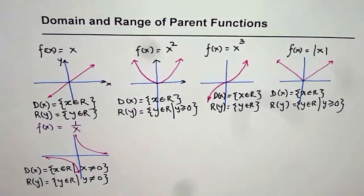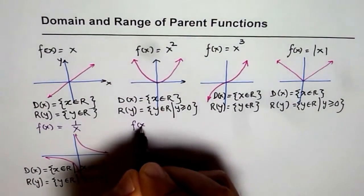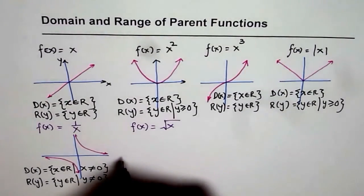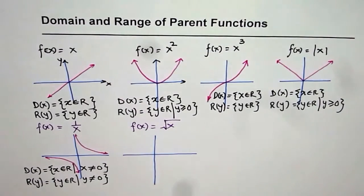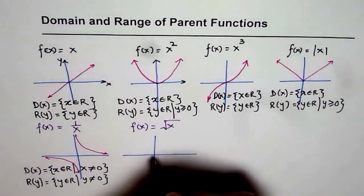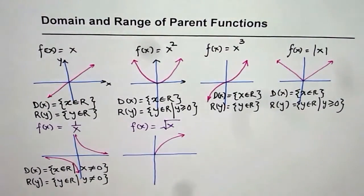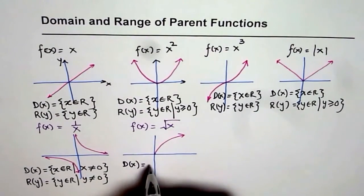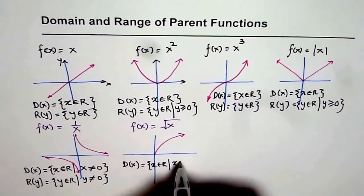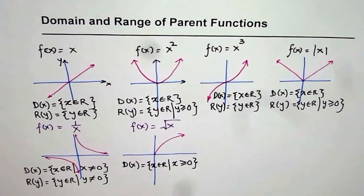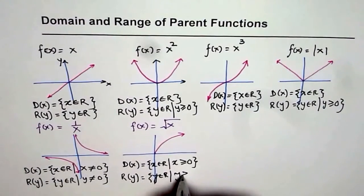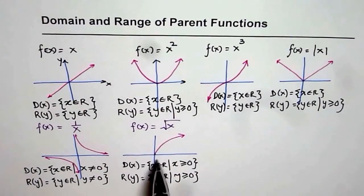Now we will consider another parent function: f of x equals to square root of x. Within a square root, we cannot have negative numbers, since the square root of a negative number is imaginary. If you sketch this function, you get a curve only in the first quadrant. Domain is restricted and range is also restricted — this is one of the most restricted parent functions. Domain: x belongs to real numbers, but x is greater than or equal to 0. Range: y belongs to real numbers, but y is greater than or equal to 0.